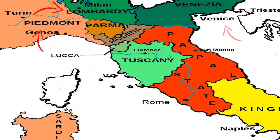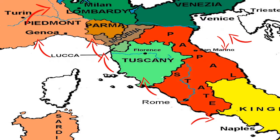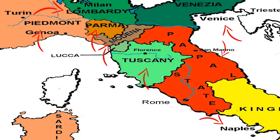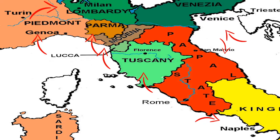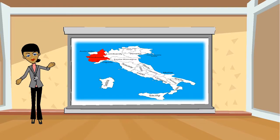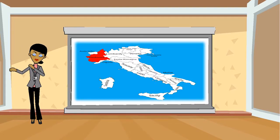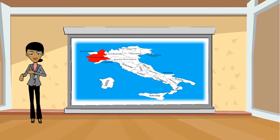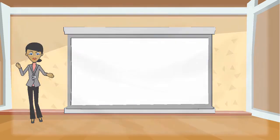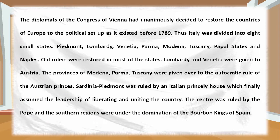The diplomats of the Congress of Vienna had unanimously decided to restore the countries of Europe to the political setup as it existed before 1789. Thus Italy was divided into eight small states: Piedmont, Lombardy, Venetia, Parma, Modena, Tuscany, Papal States, and Naples.